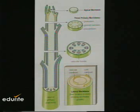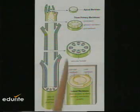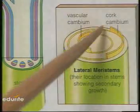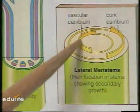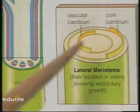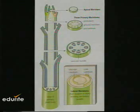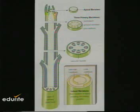Secondary growth takes place by the thickening of the stems and the roots through the lateral meristems, made up of the vascular cambium and the cork cambium. The intercalary meristems are found at the base of the internode and they result in the increase in length of an organ.